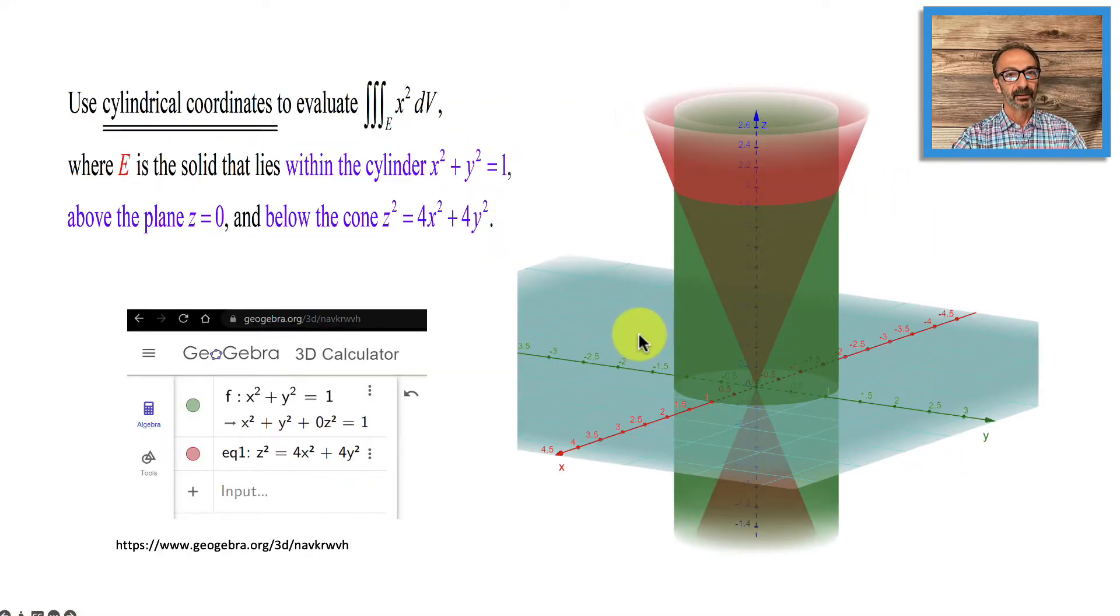Here is the graph one more time. We're trying to find the triple integration of this region here under the cone, within the cylinder, of x to the second, the function x squared. I do have the link right here for this graph if you want to see it and zoom in, zoom out. Our x-axis, y-axis, z-axis - you could click on this to take it off to see it without the cylinder, or click on this to take it off to see it without the cone.